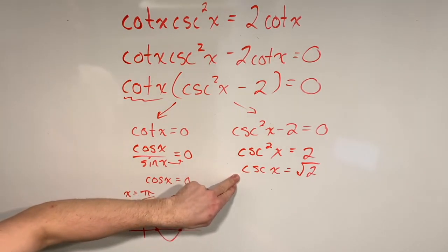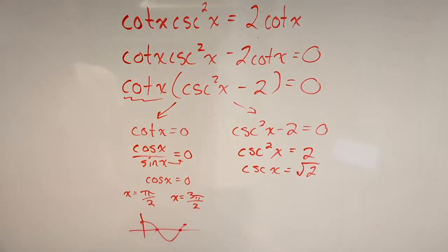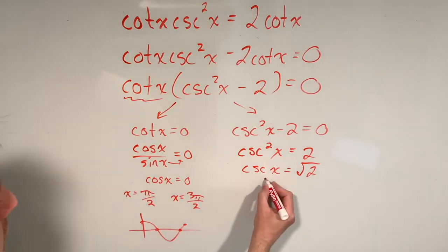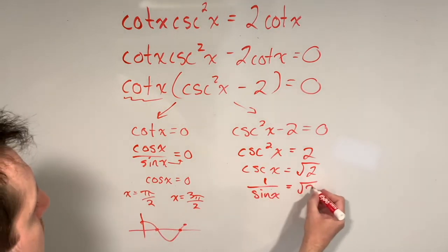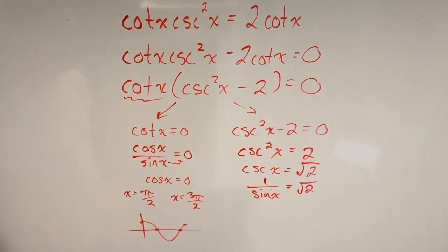That's a reciprocal trig expression, and I don't really like that, so I'm going to change it to a primary trig expression. And in this case, we know that cosecant x is just one over sine of x. So I'm going to change it into one over sine of x. I've still got that root two on the right hand side.